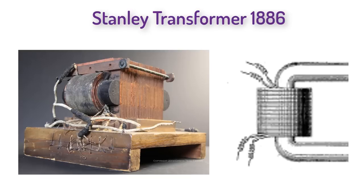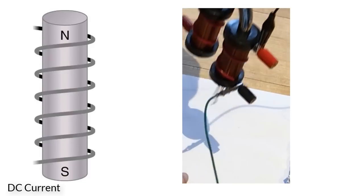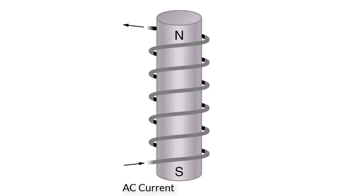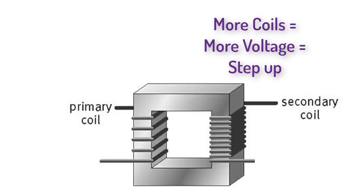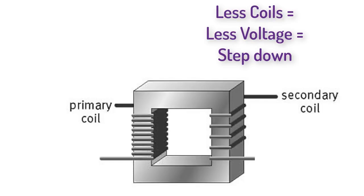You can change the voltage, but if you increase it, you have to correspondingly decrease the current, and vice versa. A transformer is actually a deceptively simple device — just two separate coils wrapped around an iron ring or bar. Coils of wire with current act like a bar magnet, called an electromagnet. Alternating current in the first coil creates an alternating magnetic field, which creates an alternating current in the second coil. If the second coil has more loops, you get more voltage and less current. If it has fewer loops, you get less voltage and more current.